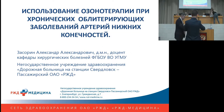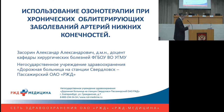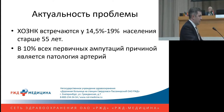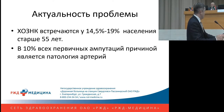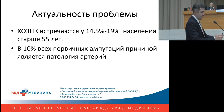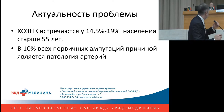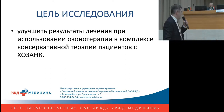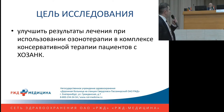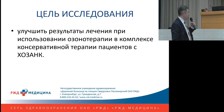Dear chairs, dear colleagues, I will be talking about the use of ozone therapy in chronic obliterating diseases of the lower extremity arteries. This problem is still relevant, and according to academic data, up to 19% of people aged over 55 years suffer from obliterating diseases of the lower extremity arteries, and they are the reason behind a large number of amputations — up to 10%. The goal of the study was to improve treatment outcomes using ozone therapy in combination with conservative therapies.